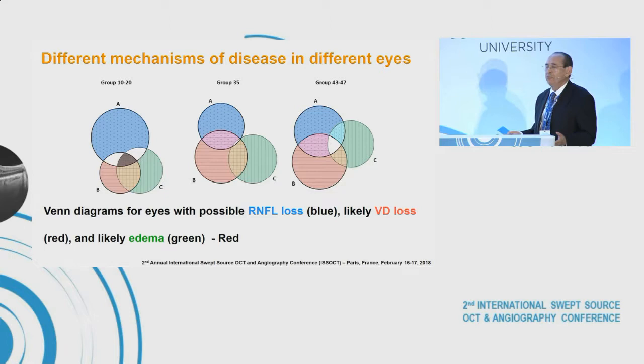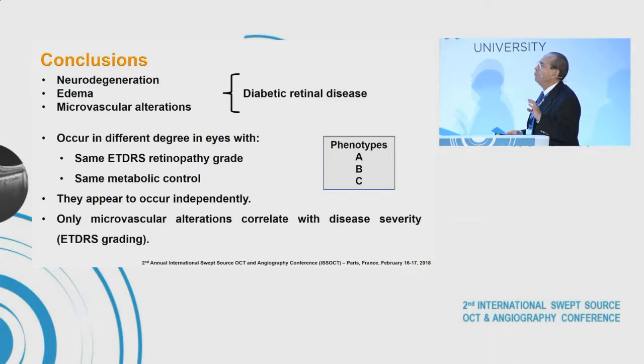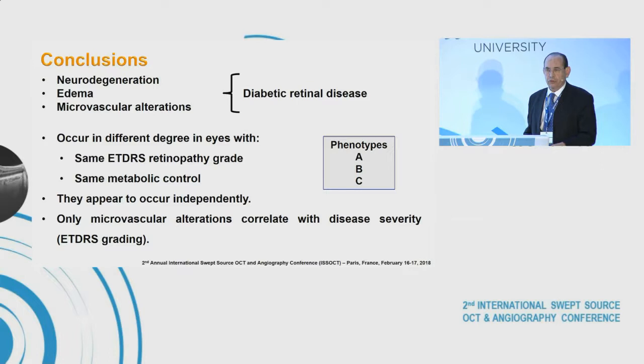Interestingly, these changes don't occur together. In a Venn diagram showing how much these changes coincide across eyes, they don't. Eyes with neurodegeneration in blue show little coincidence with capillary closure, vessel density loss, or edema — and the same holds for each of these mechanisms. Our conclusion, although this is quite challenging, is that we really have neurodegeneration, edema, and microvascular alterations in diabetic retinas, occurring to different degrees in eyes with the same ETDRS grade and the same metabolic control, and they appear to occur independently.